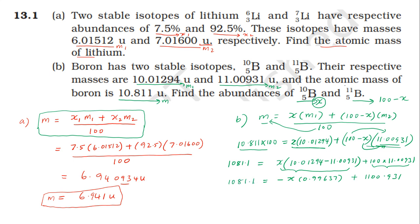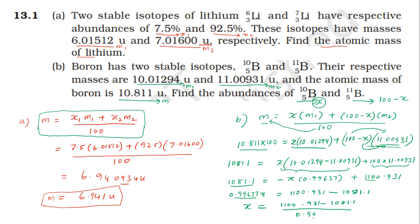Continuing the calculation: 1100.931 minus 1081.1 equals 19.831. Divided by (11.00931 minus 10.01294) equals 0.99637. This gives X approximately equal to 19.9.